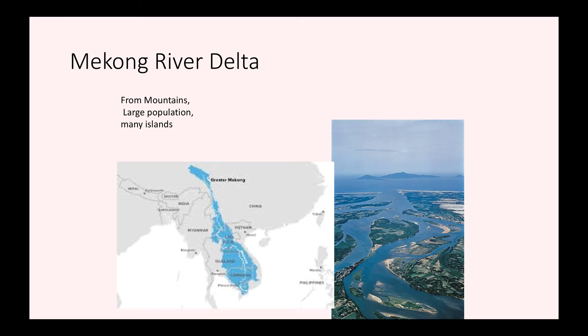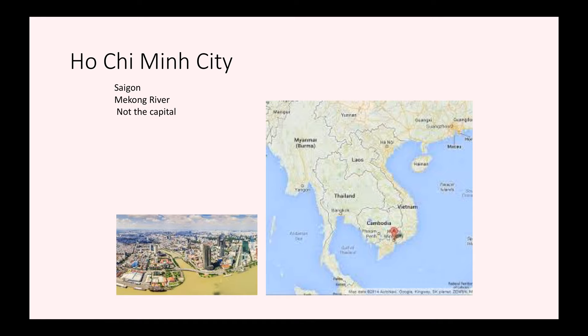The other delta is the Mekong Delta. The Mekong River runs from the Tibet Mountains, all the way down through China, touching Burma, Thailand, Laos, and Cambodia, and eventually reaching the ocean. You can see it breaking into many little rivers and creating a lot of little islands — that's a typical delta. One thing to note about the Mekong River Delta is it has a large population; in fact it has the biggest concentration of people in Vietnam. As you can see, there are many islands formed by the Mekong Delta.